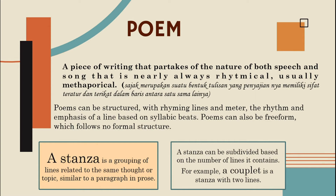Poem can be structured with meter, line, and rhyme — the rhythm and emphasis of a line based on syllabic beat. Poem can also be free form, which follows no formal structure. Jadi, sajak ini dia terstruktur karena diatur dengan ritmi, baris, dan bunyi. Namun, sajak juga bisa ada dalam bentuk free form atau bebas yang tidak memiliki struktur. Secara umum, dia akan terlihat sama.